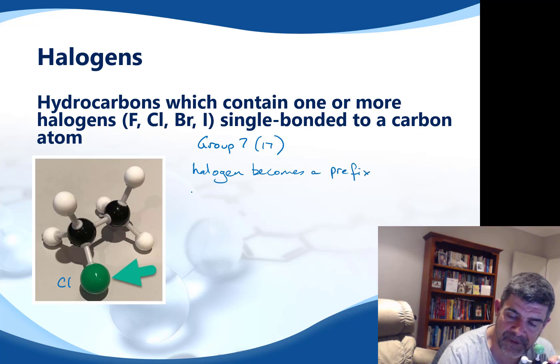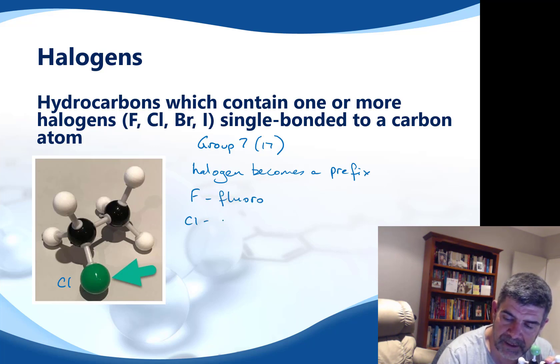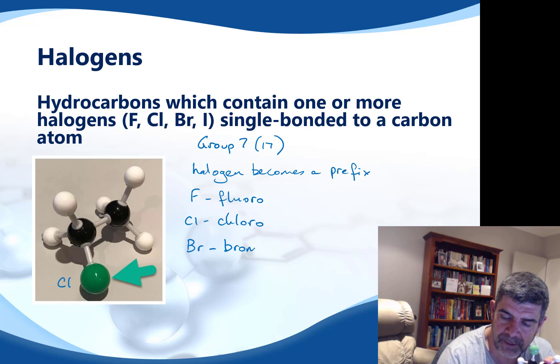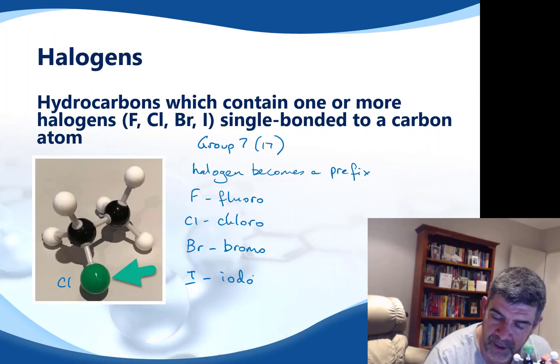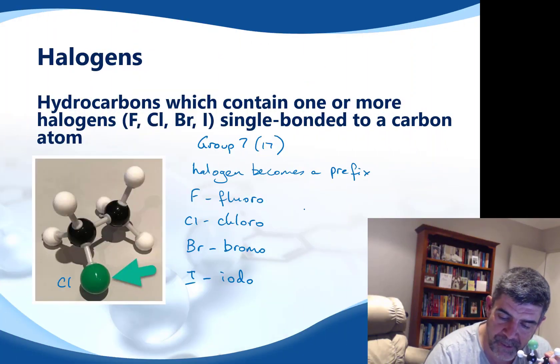If it's fluorine, it's fluoro; if it's chlorine, it's chloro; if it's bromine, it's bromo; and if it's iodine, it's iodo. So here is a molecule — it has two carbons, therefore we'd call it eth-something. It has a single bond between the two carbons, so we'd call it ethane. It has a chlorine atom where a hydrogen should be. We assume the base name as if they were all hydrogens, then add the halogen prefix. So we would call this molecule chloroethane.